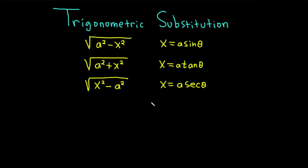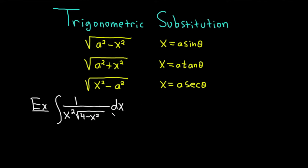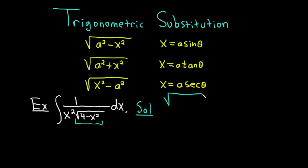Let's go ahead and start by doing an example. We have the indefinite integral of 1 divided by x squared times the square root of 4 minus x squared. Right away, you notice the piece with the square root. You can write that piece as follows — instead of 4 minus x squared, write it as the square root of 2 squared minus x squared.